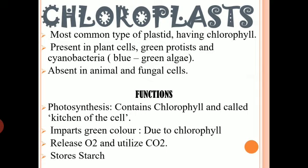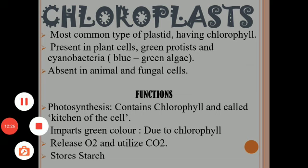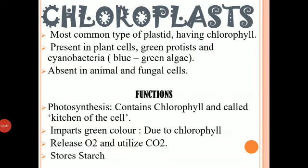Chloroplast is a very common type of plastid, and it consists of chlorophyll. Due to the presence of chlorophyll, plants are capable of carrying out photosynthesis. Chloroplasts are present in plant cells, in green protists like Euglena, and also in certain prokaryotes — that is cyanobacteria, also called blue-green algae. Chloroplasts are absent in animal cells, fungal cells, and protozoan cells.